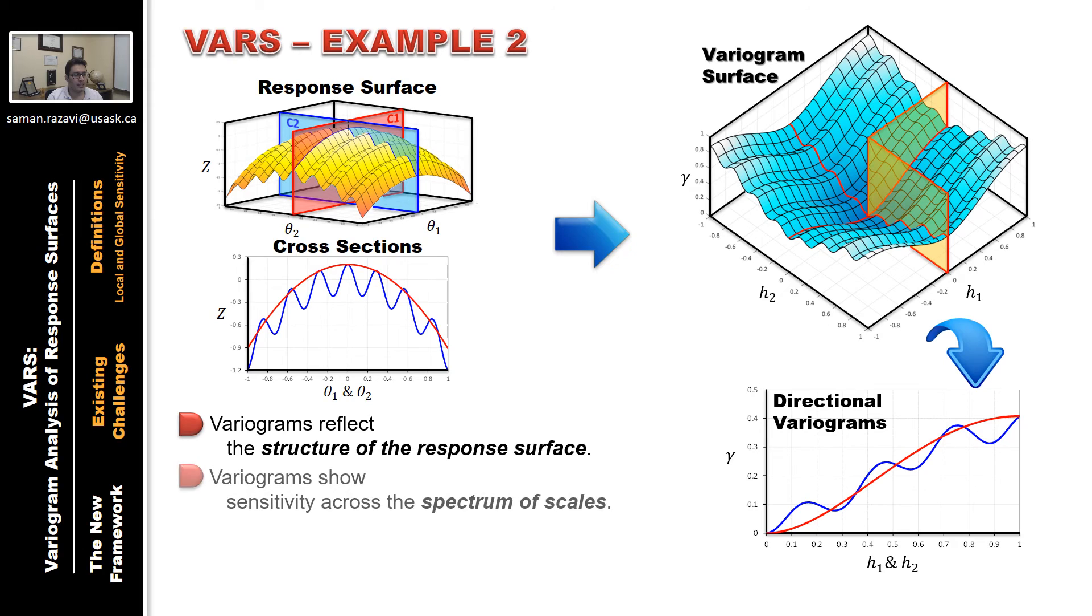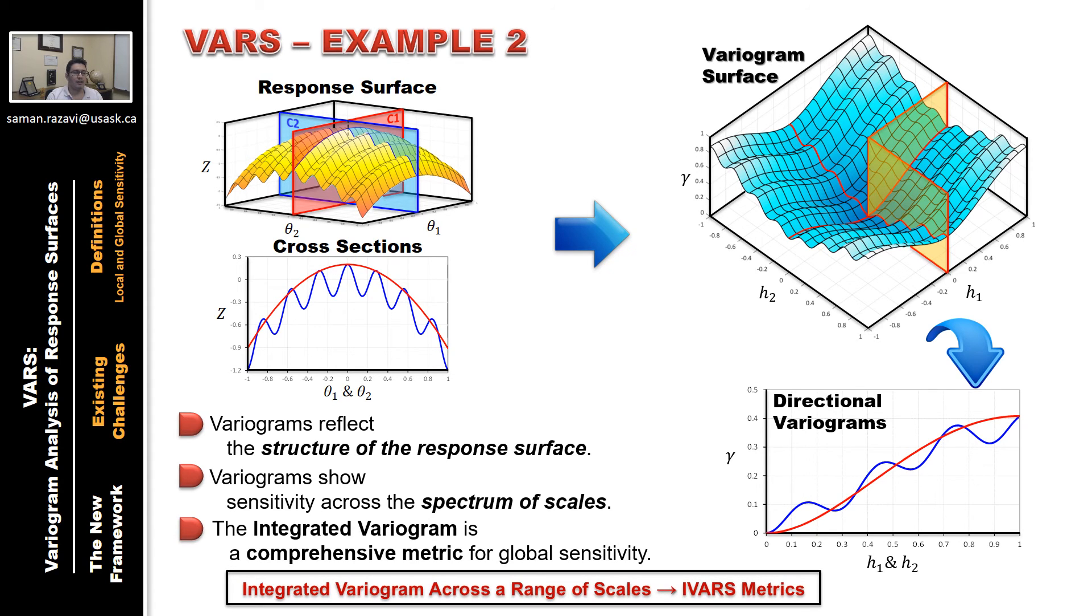Variograms give sensitivity information across the full spectrum of scales. But for a comprehensive metric for global sensitivity that includes everything, we can integrate this function and calculate the area under the curve. And that is referred to as integrated variogram across a range of scales or IVARS metrics.